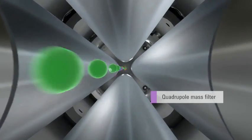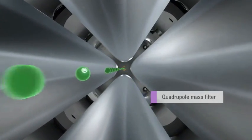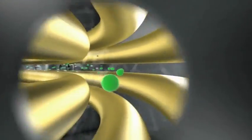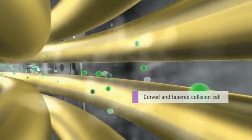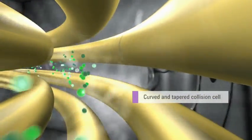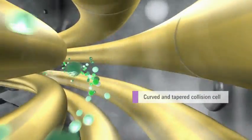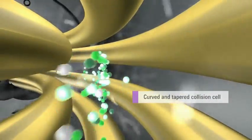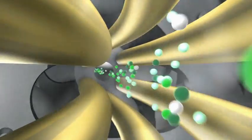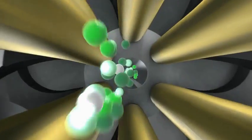The first quadrupole mass filter allows only ions of the target mass to pass through into the collision cell. The updated hexapole collision cell design maximizes ion collection and transmission over a wider mass range. Linear axial acceleration ensures fast and sensitive MS-MS without crosstalk effects, even at the fastest MRM dwell times.